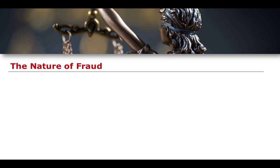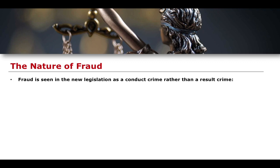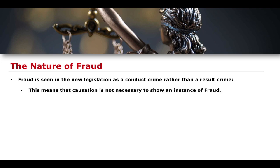Before we finish, let's touch on the nature of fraud. In the new legislation, fraud is seen as a conduct crime rather than a result crime. This means that causation is not necessary to show an instance of fraud — there is not necessarily an end result that needs to be achieved in order for somebody to have committed fraud. We therefore shift away from the idea of it being a results crime to the idea of it being a conduct crime. The next lesson will look at the first type of fraud: fraud by false representation as codified in section 2 of the 2006 Fraud Act.